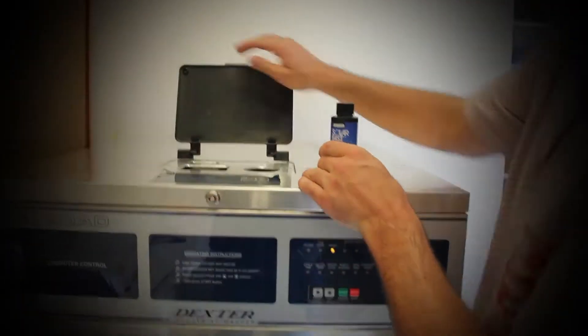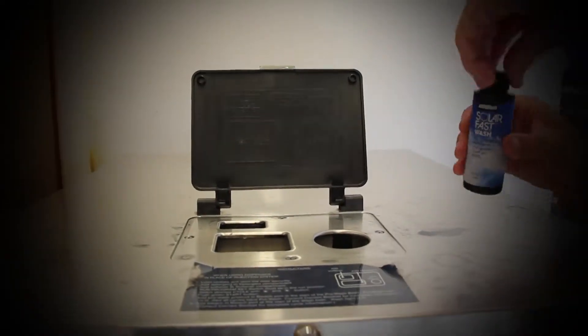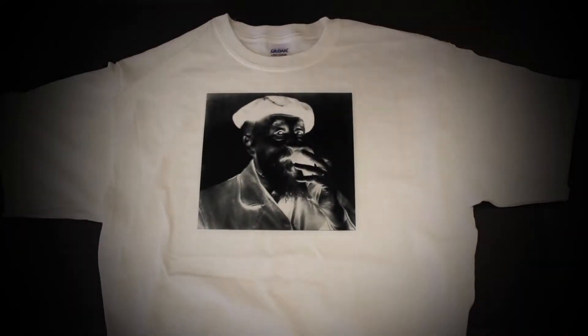Run your machine on its hottest cycle and use Solar Fast Wash. Then, wear it. So that was the basic how-to of putting an image onto a shirt.